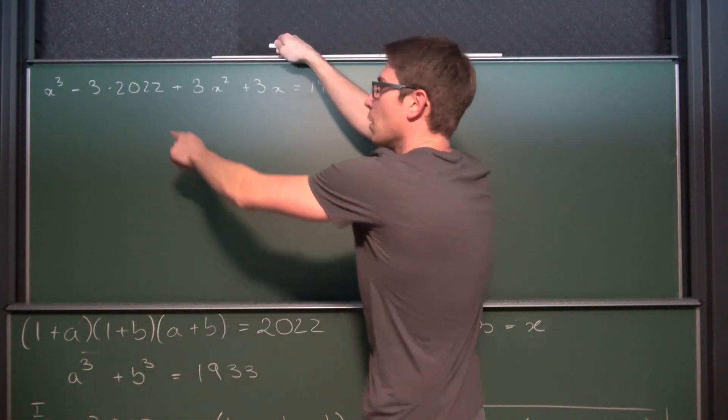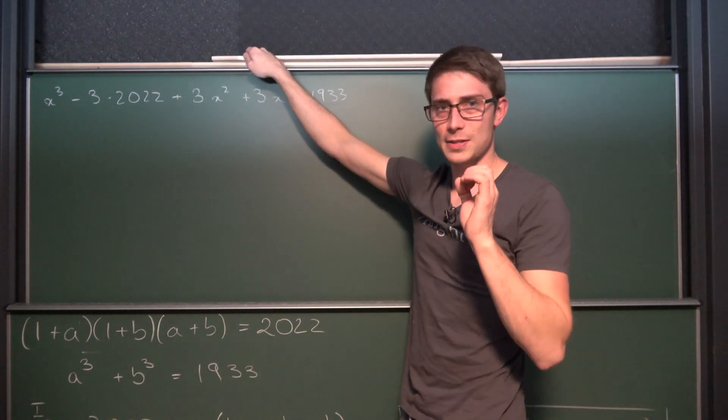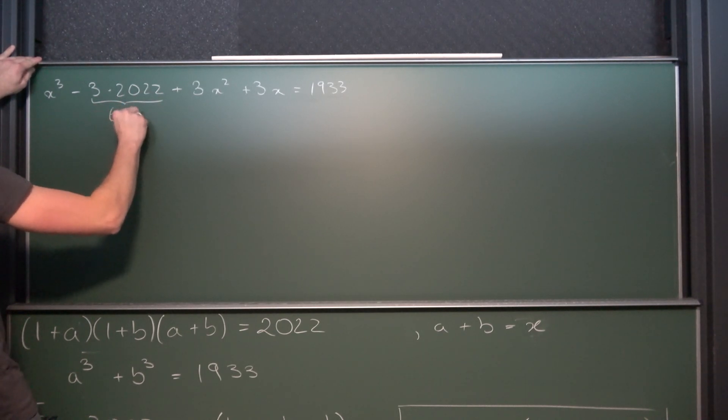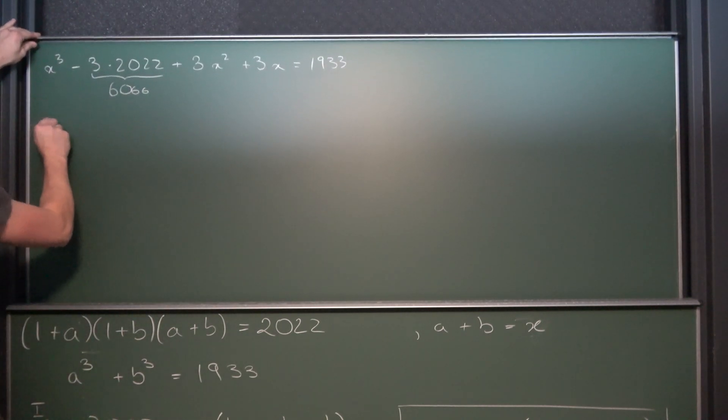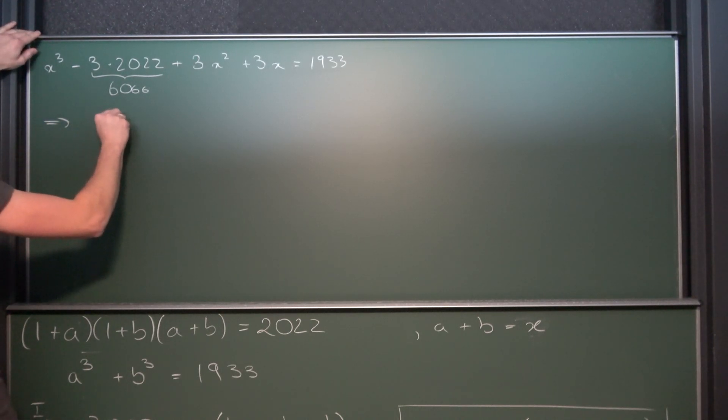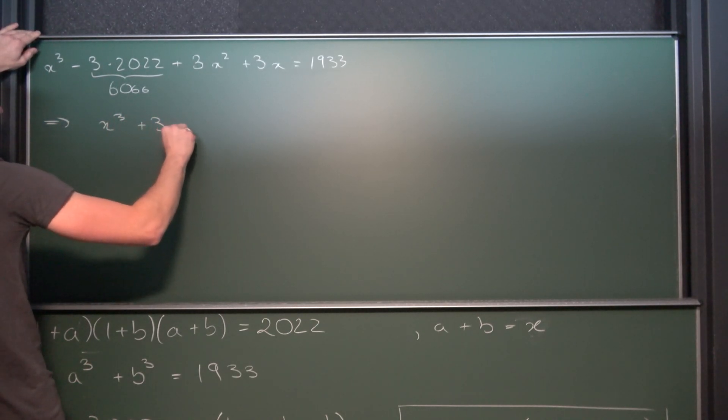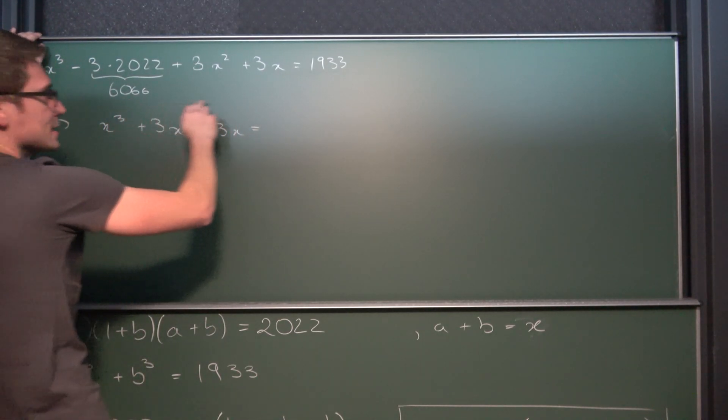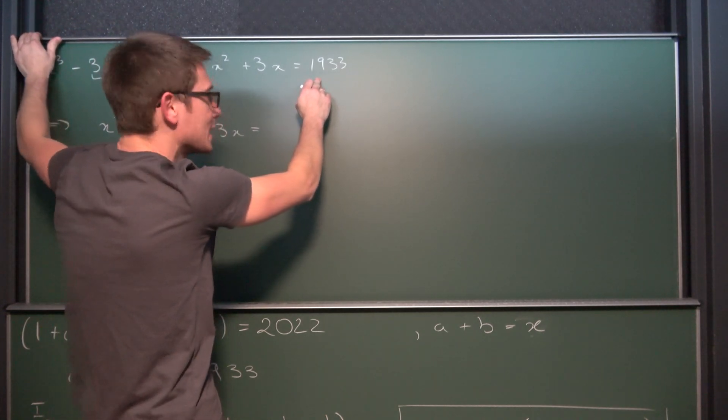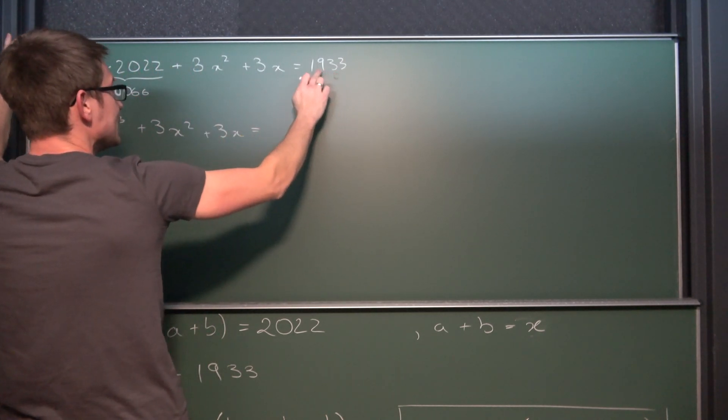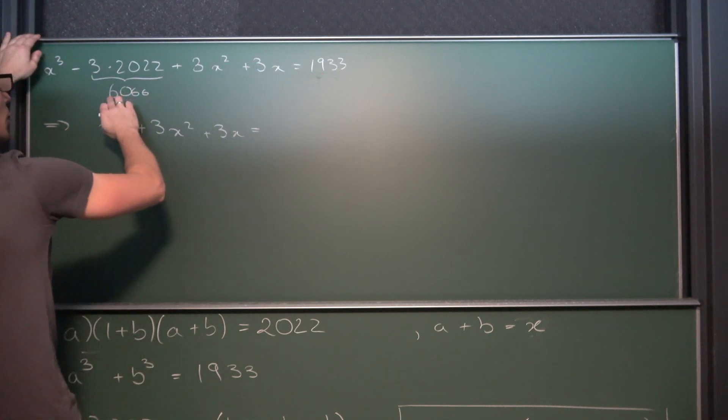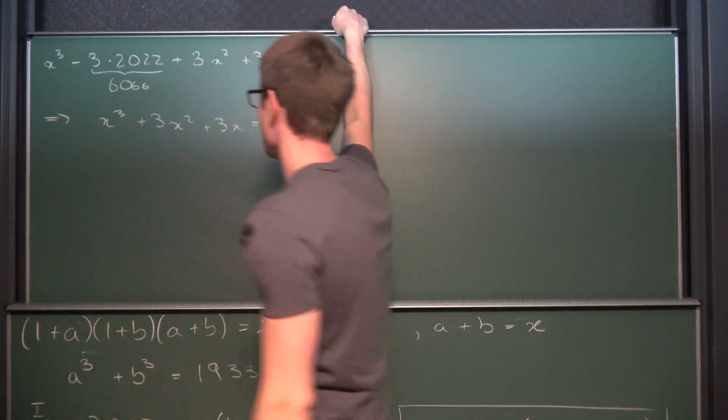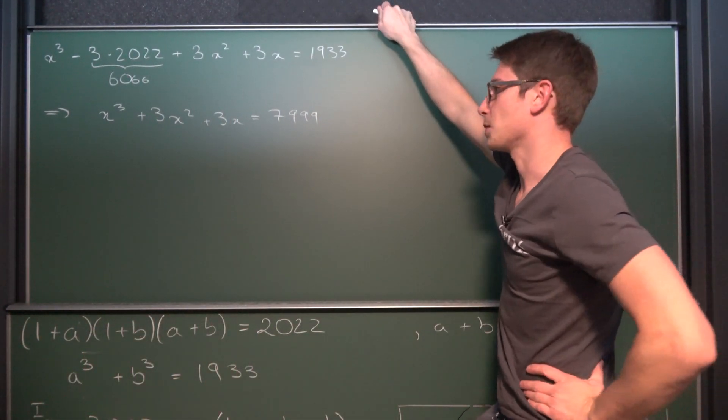Now three times 2022 is 6066. We can add this on both sides leaving us with a cubic equation x to the third power plus three times x squared plus three times x is equal to 6066 plus 1933. So we are going to get 99 here with a nine here and also six plus one is going to give us 7999.